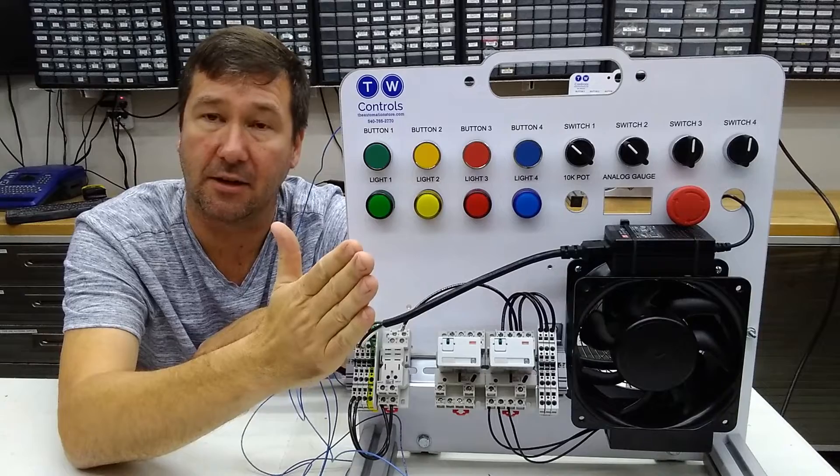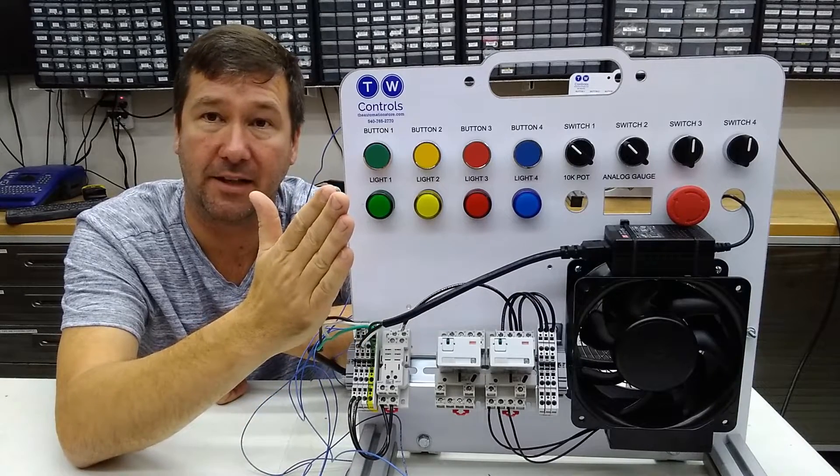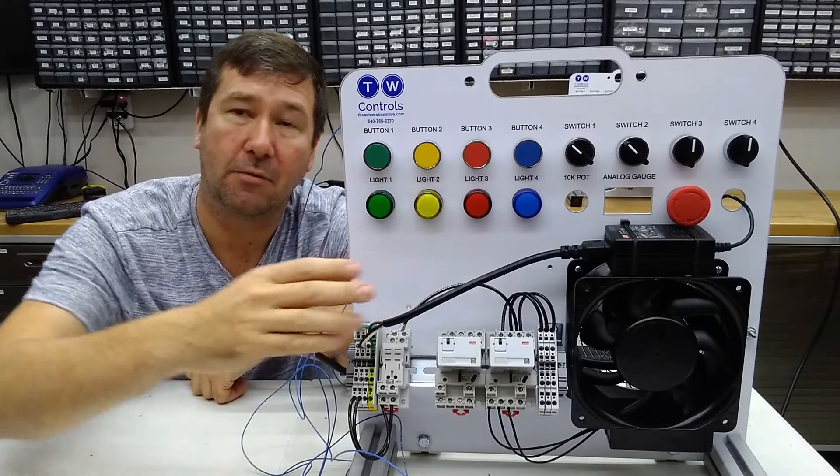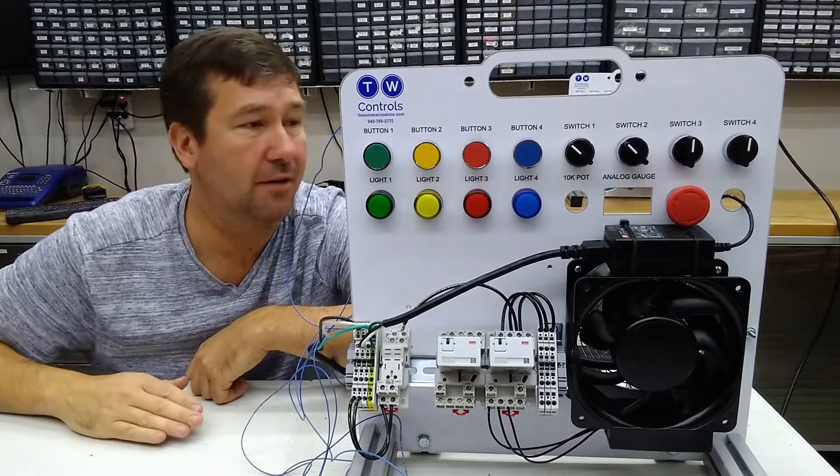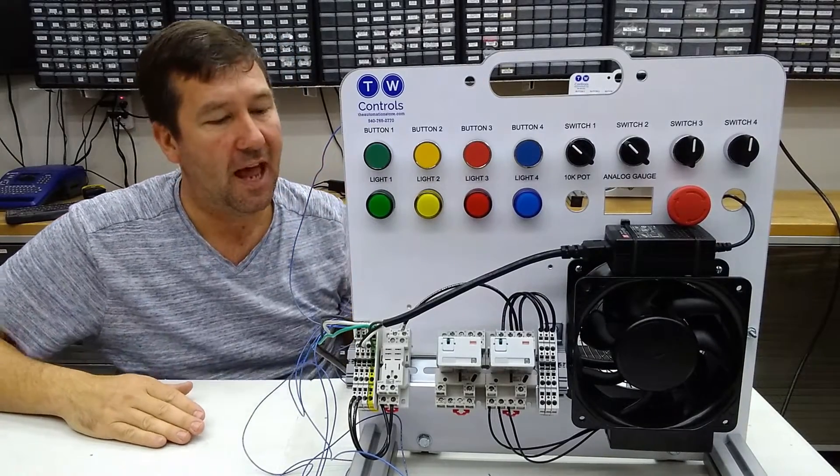You have off, which means that there is no way to energize the relay. And you have auto, which usually will tie into some other circuit. So let's go ahead and do that one.